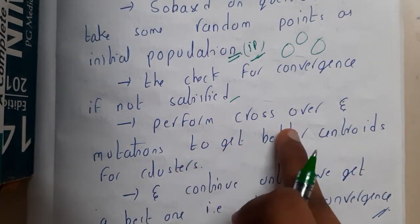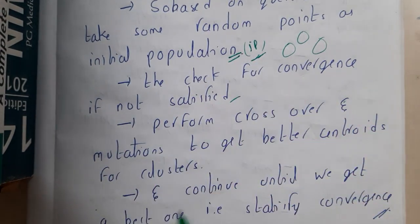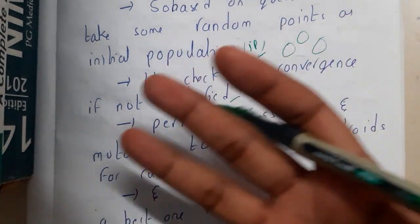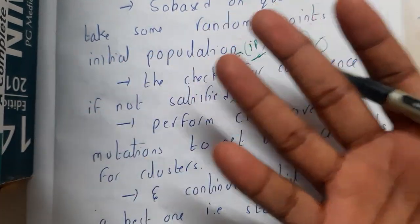If you are not satisfied, you will perform crossing, mutation, and all those steps, and you get new clusters and new centroids. Once you got them, again you will check for convergence whether you are satisfied or not.